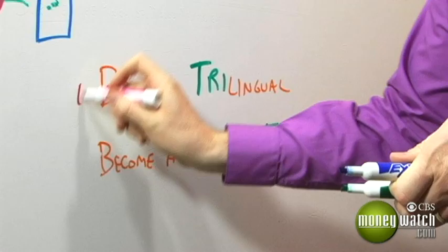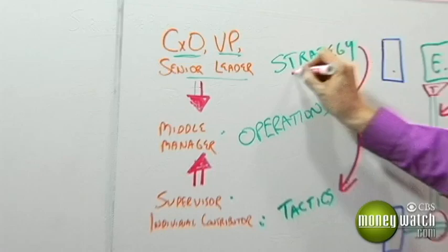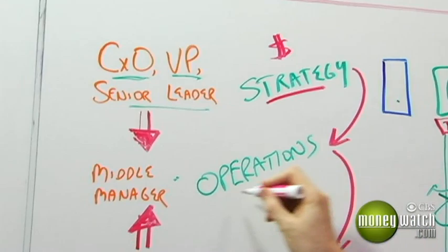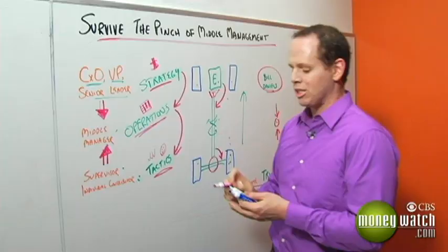So, what can you do about this? Well, there are two things you should do. The first is you need to become trilingual. You need to speak all the languages of the organization. You need to speak the language of strategy. That's usually a financial language, things like revenue and market share. You need to speak the language of operations, things like program roadmaps and product launches. And you need to speak the language of tactics, things like factory outputs, customer satisfaction scores.